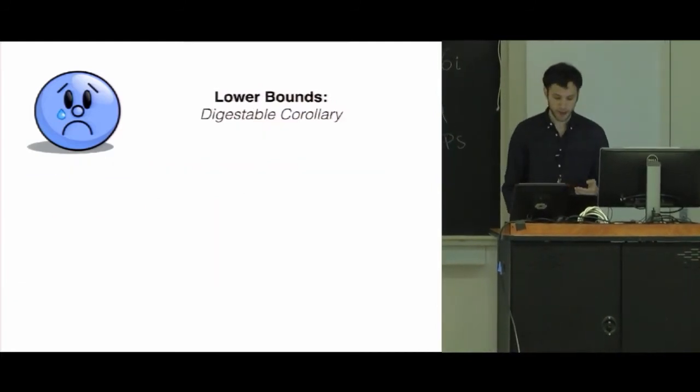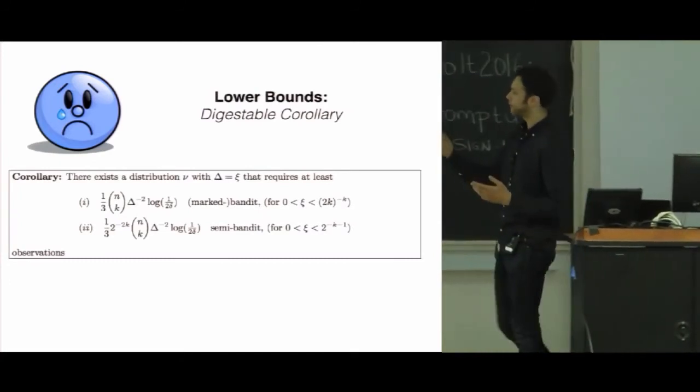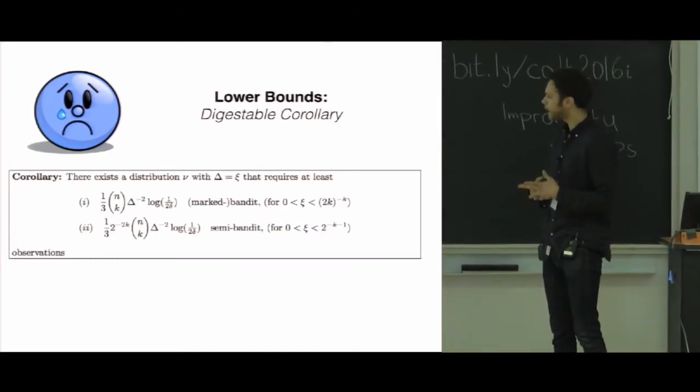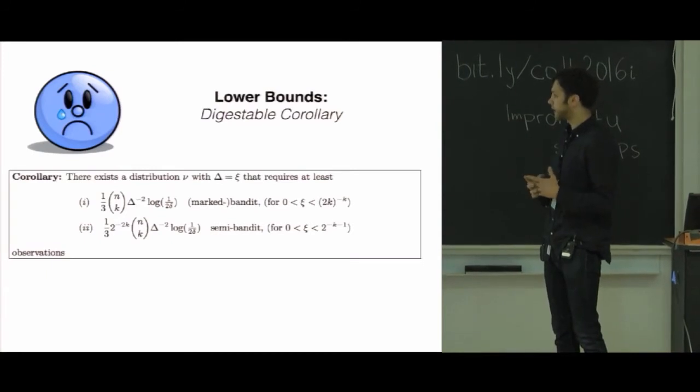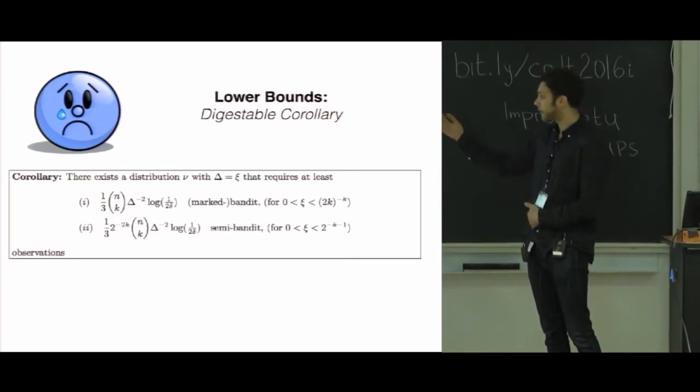Actually, we care about bounds that depend on gaps. I don't want to go through the most general theorem that we have, but we have one that just says that we can always construct a distribution that if the gap is sufficiently small, we get this sort of n choose k inverse gap squared that we would see.